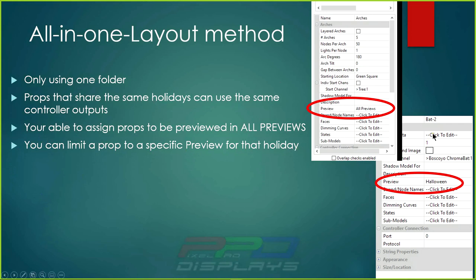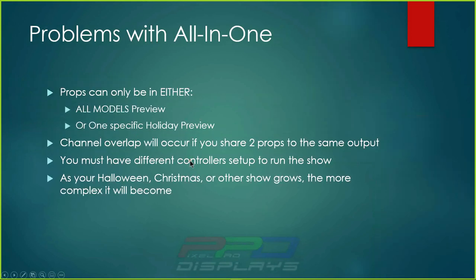For example, you can put Boscoio bats in your Halloween preview only, while your arches are in all previews so they show up in both Christmas and Halloween. Your Halloween-specific props only appear in the Halloween layout. The problem, however, is that putting controllers together — having arches and bats on the same controller — gets messy, because props start stacking on top of each other. Props can be in either the all-models preview or in one specific holiday preview.